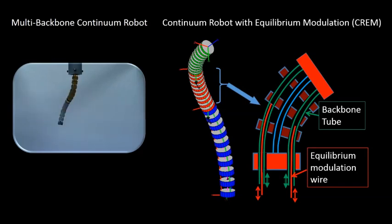These robots still use the direct actuation of the tubular backbones to achieve the large-scale motion, but in addition they add these wires inside the structure that can slide in and out of the tube. By sliding these wires we are able to modulate the equilibrium through redistribution of cross-sectional stiffness along the length of the snake segment.